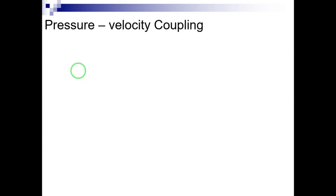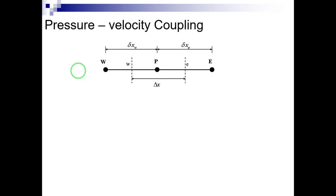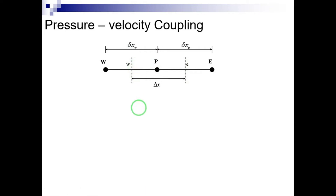Now let's talk about pressure-velocity coupling. We will answer an important question: should pressure and velocity values be stored in the same nodes or not? We first discretize the momentum equation over a one-dimensional control volume. Here we have three nodes — p, w (west), and e (east) — along with the control volume surfaces denoted by lower-case w and e. We take the integral of the pressure gradient on this control volume to discretize it, then write the discretized form of the momentum equation in the x-direction.